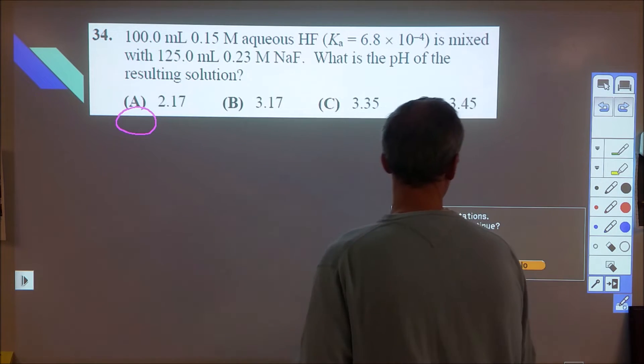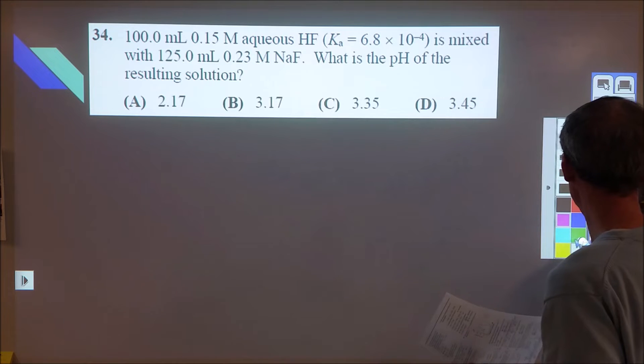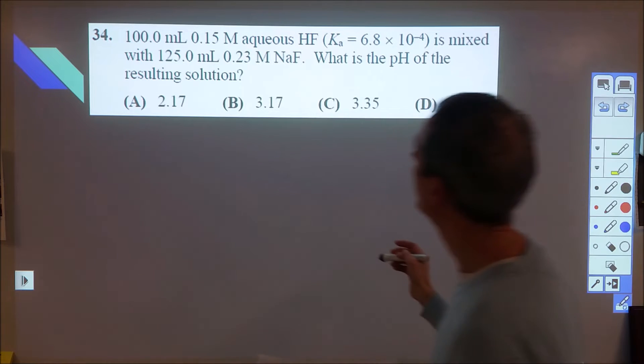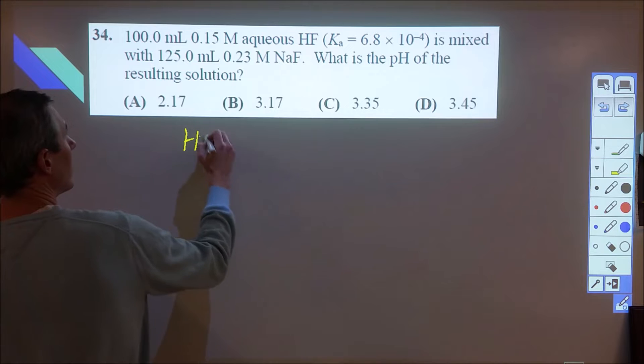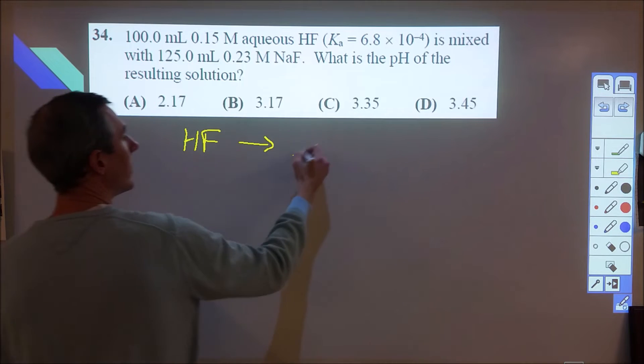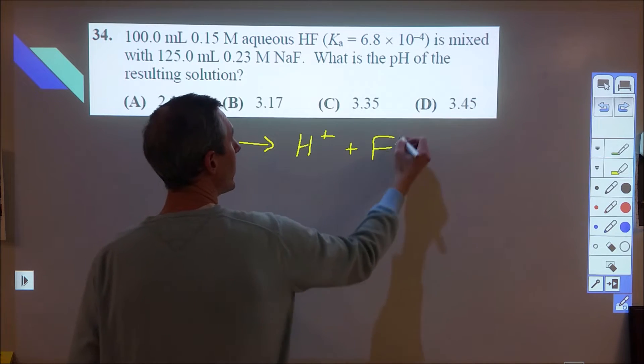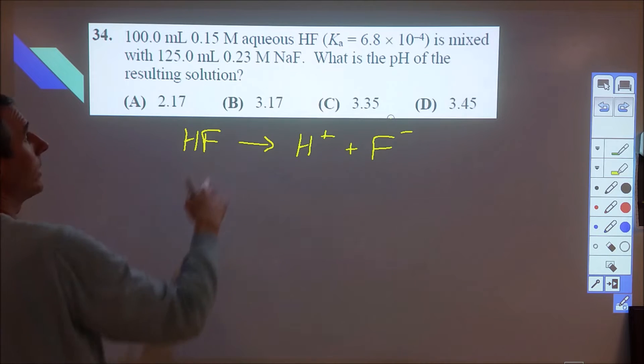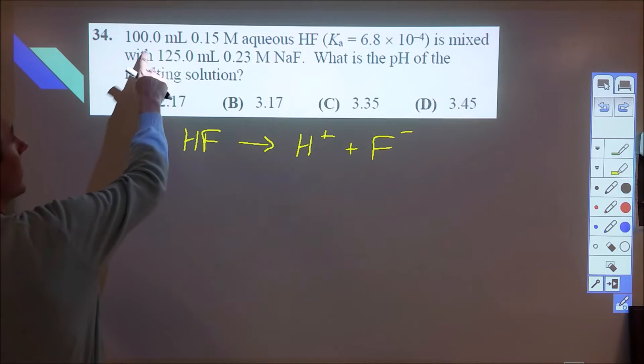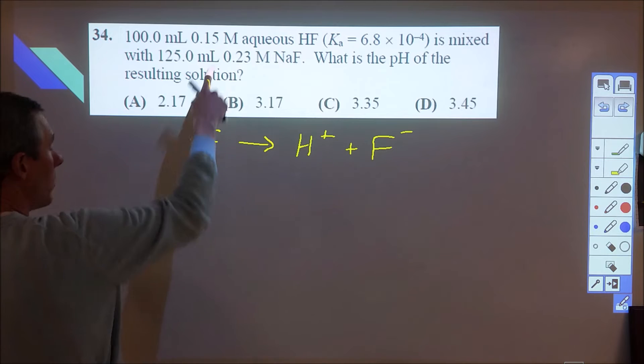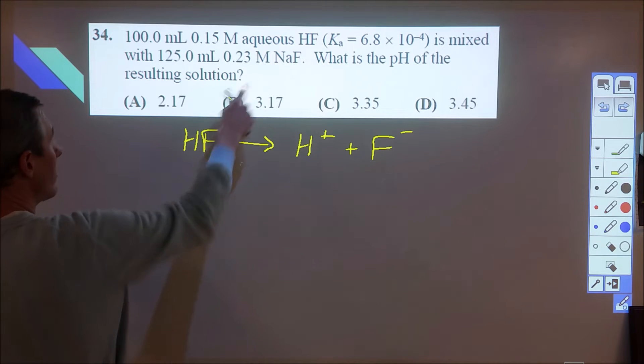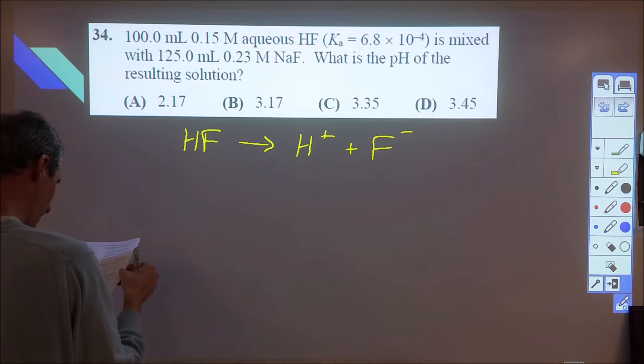Okay, so that was quite a bit, but we'll move along. All right, 34, we have HF. HF is going to H plus and F minus. We have differing amounts of both, and we have an equilibrium constant. So what I did for this was I just changed this into moles, and I changed this into moles.